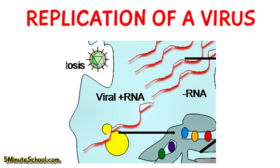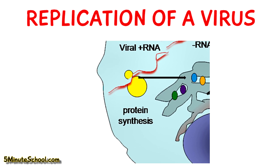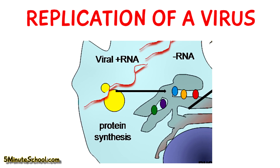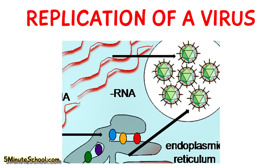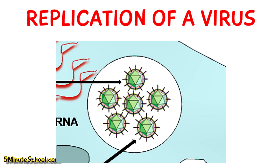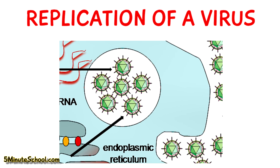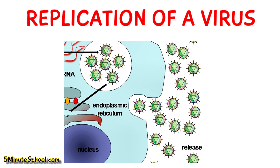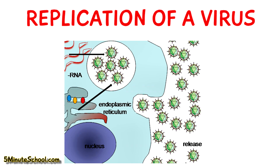The virus then takes over protein production in the cell. The viral genetic information is replicated and new virus particles form inside the cell. Once there is an excess of virus particles, they are either released from the cell to travel around the body and infect other cells, or the cell containing all of the viruses bursts, releasing multiple virus particles and killing the host cell.